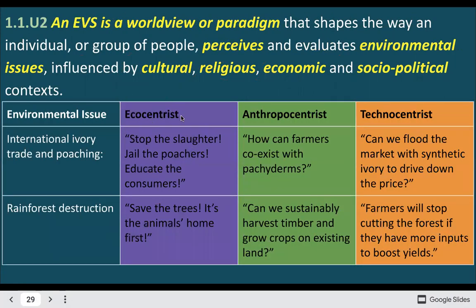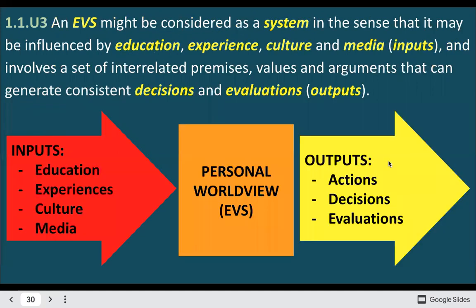The three main viewpoints are ecocentric, anthropocentric, and technocentric. These are examples of how they might approach a different situation. You can see that they all want to protect the environment and care for it, but they just have a different focus — are we focusing on just the earth itself and how we can help it for its own worth, or are we going to focus on the human aspect, or how can we use technology to solve these problems? The ultimate goal, of course, is to better the environment.